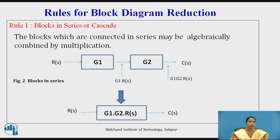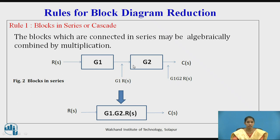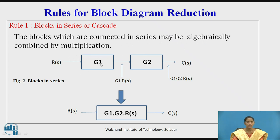These rules are used to simplify block diagrams. Rule one applies when blocks are connected in series. As shown in figure 2, G1 and G2 blocks are connected one after the another. These can be combined into a single equivalent block G1·G2. The blocks which are connected in series may be algebraically combined by multiplication — whenever you see two blocks in series, multiply their gains to form an equivalent block.